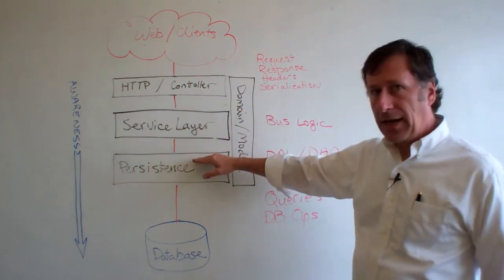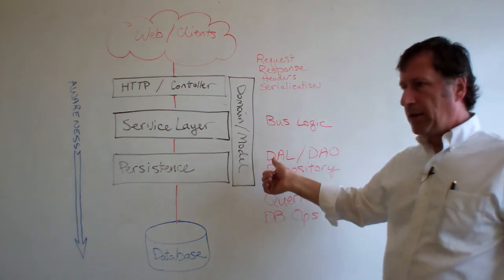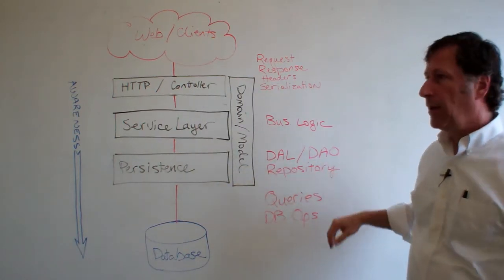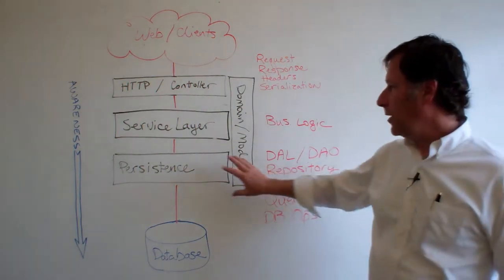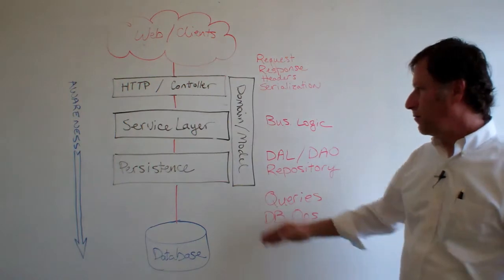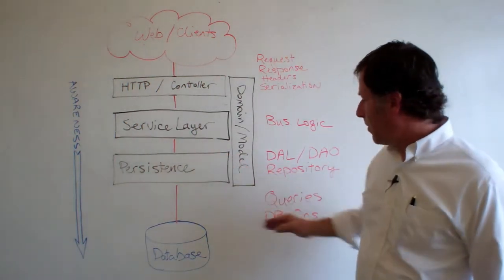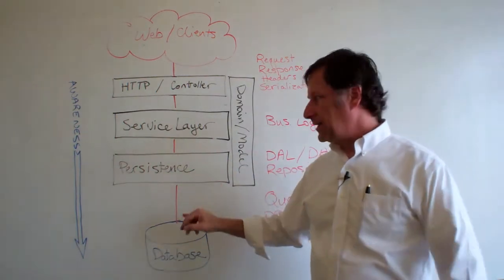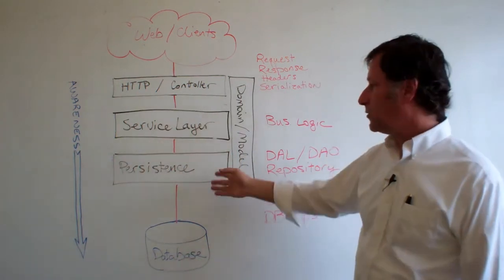It also can call the next layer down, which is our persistence layer. A lot of us know that by a term of data access layer or data accessor object. Eric Evans kind of coined the term repository pattern for there. But that's where we create methods to do queries and database operations. So it can take the domain and serialize it essentially to a database or deserialize it from database rows.